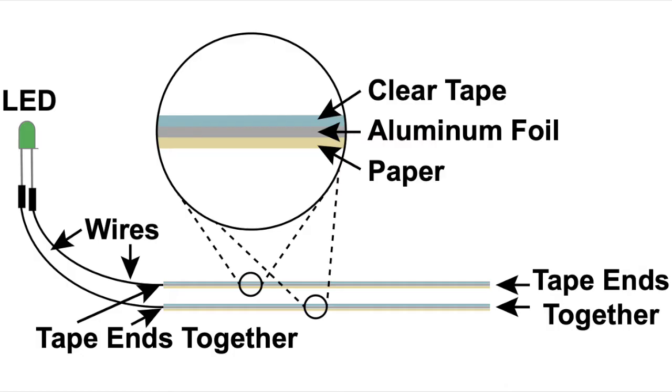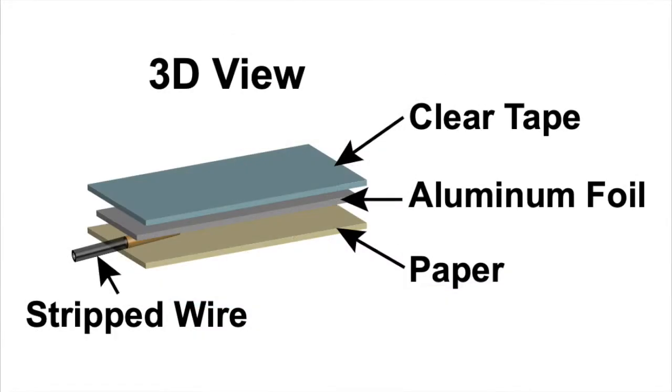These two paper-aluminum foil-tape strips are taped together at two opposite edges, and the wires connect to an LED bulb. Here's another look at this TENG where hopefully you can see a few of the things I was talking about a little better.